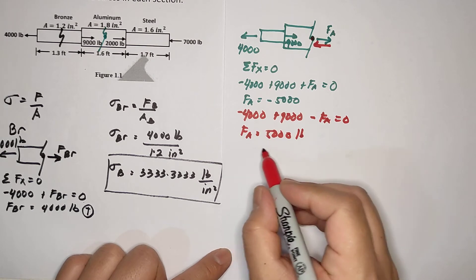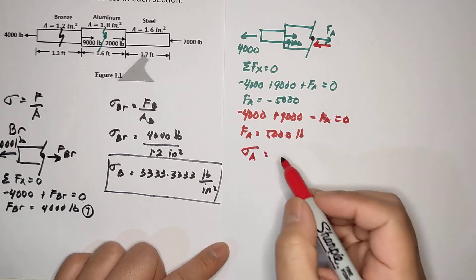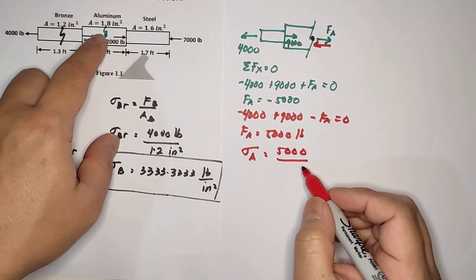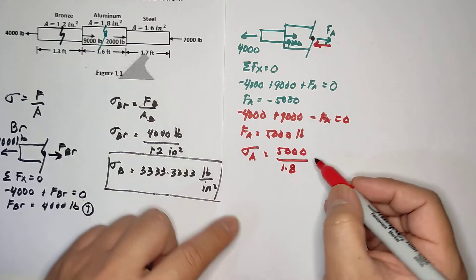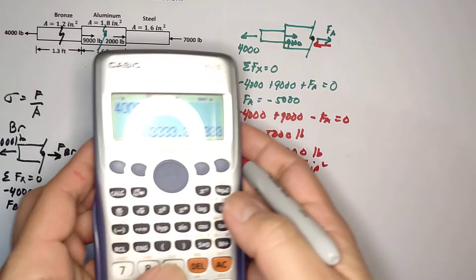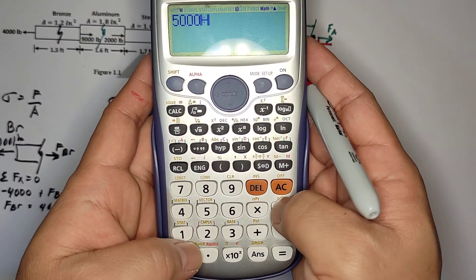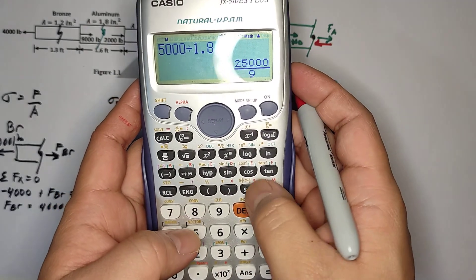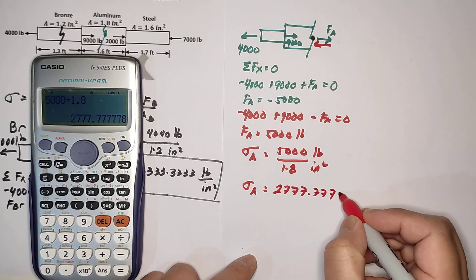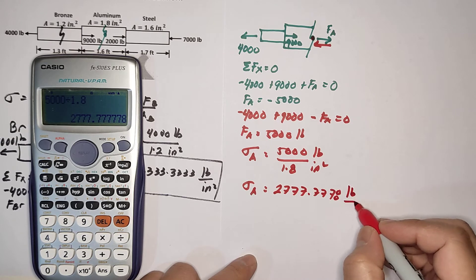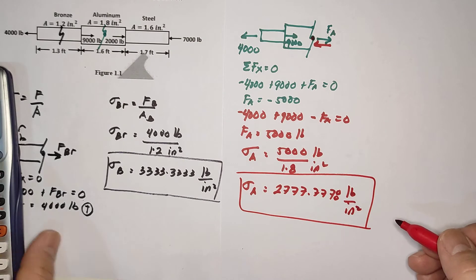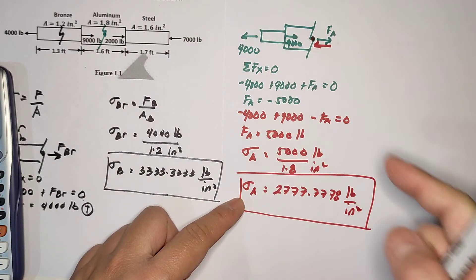FA is 5,000 pounds. Now compute the stress in aluminum: 5,000 divided by the area, which is 1.8 inch squared, giving 2,777.78 pounds per inch squared. That is the stress in the aluminum.